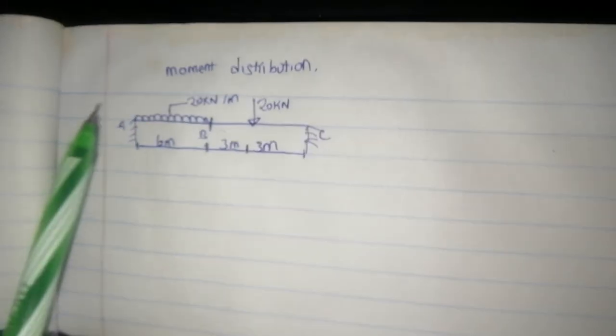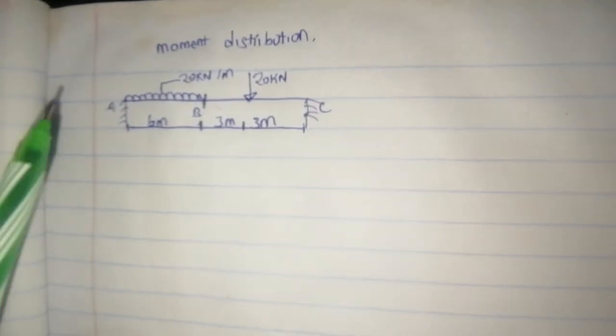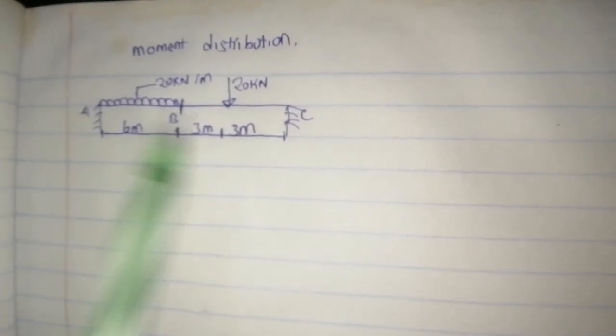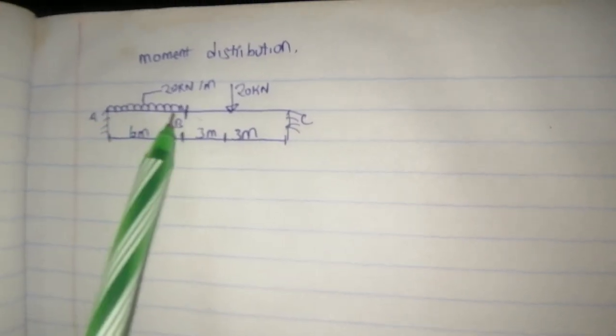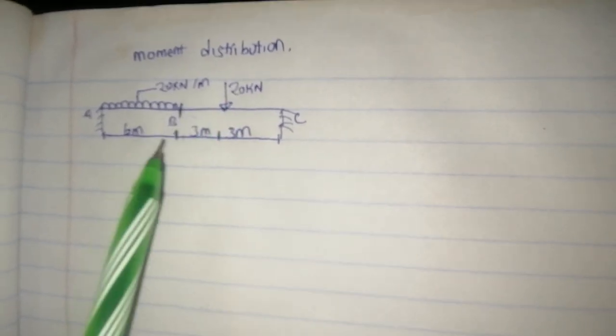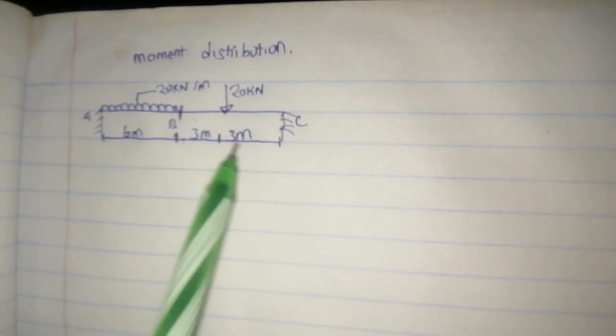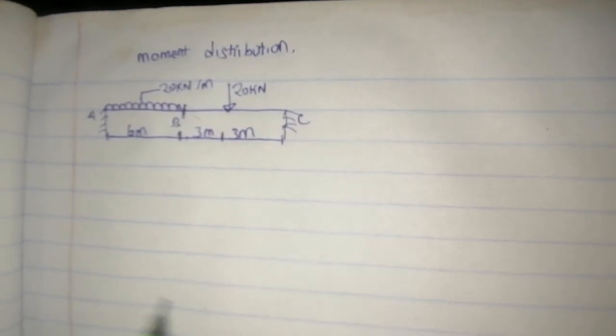We have been given a drawing and we need to find the moment. We have a fixed end on both sides, and A and B are intermediate points. Between A and B there is a uniformly distributed load of 20 kN per meter with a span of 6 meters. Then there is a point load of 20 kN with a span of 6 meters, divided equally at 3 and 3.